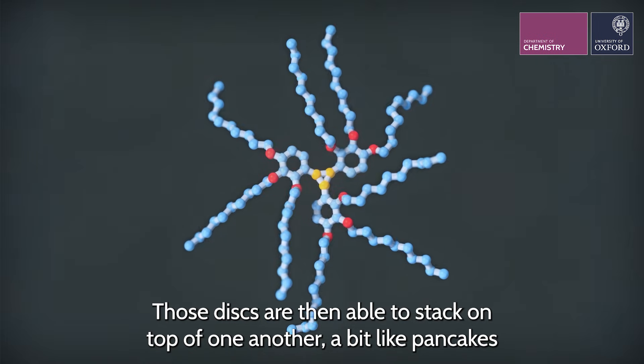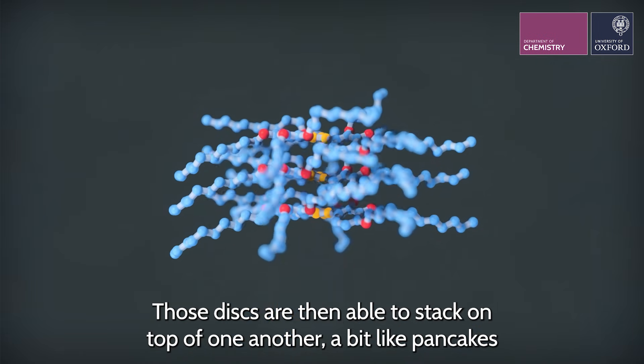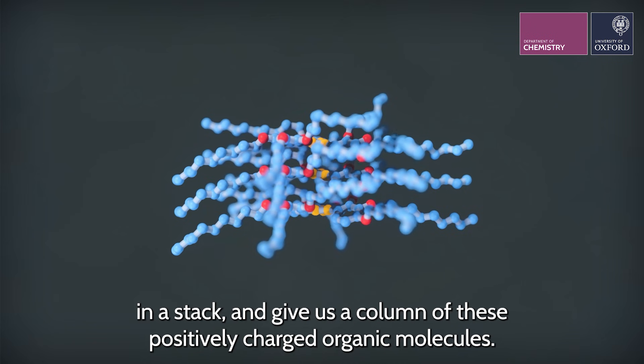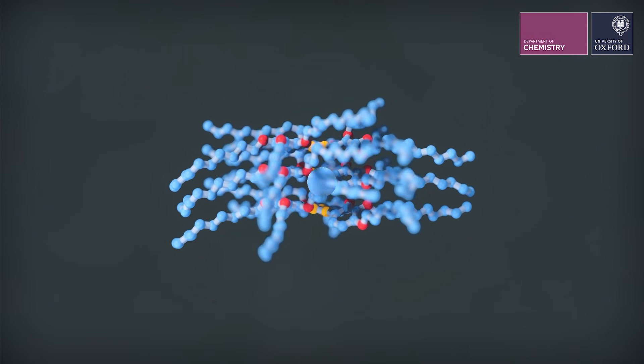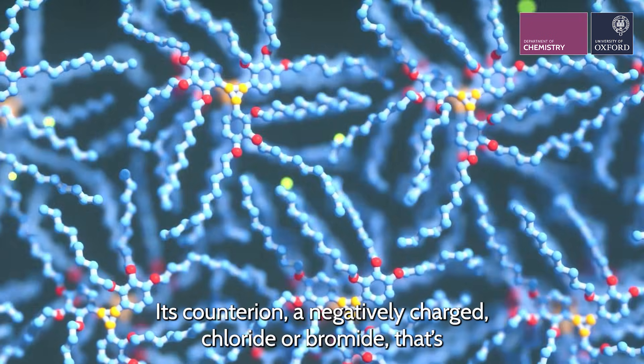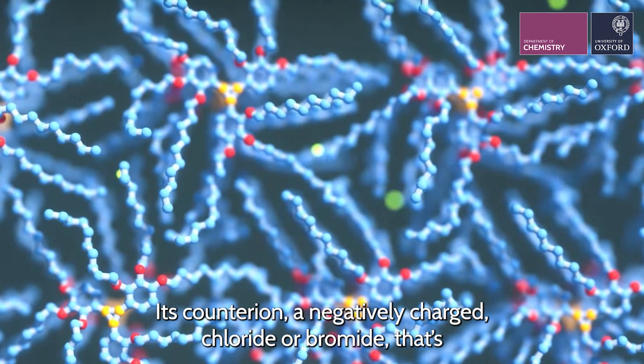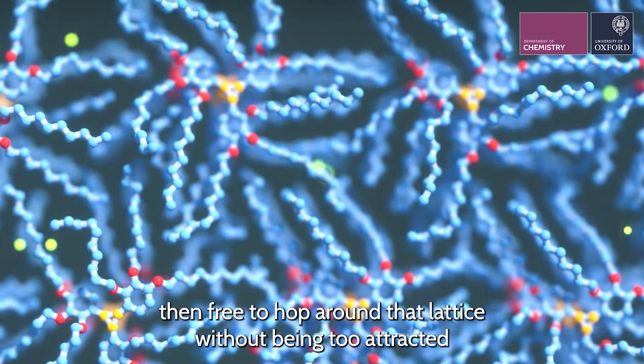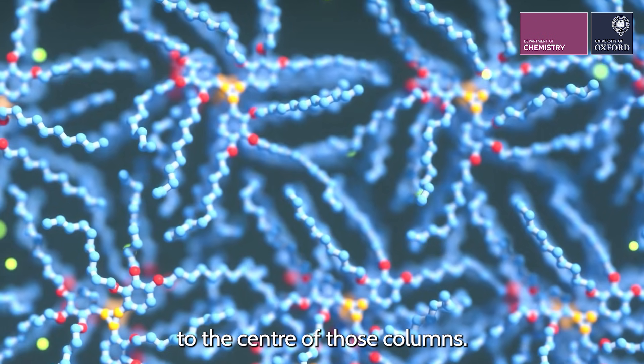Those disks are then able to stack on top of one another, a bit like pancakes in a stack, and give us a column of these positively charged organic molecules. Its counter ion and negatively charged chloride or bromide is then free to hop around that lattice without being too attracted to the center of those columns.